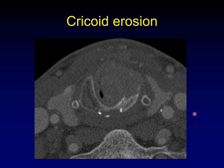Here's an example of cricoid cartilage erosion. You can see the circle of the cricoid cartilage interrupted by an erosive mass. Notice that there is sclerosis of the cartilage adjacent to the erosion — this is typical of laryngeal cartilages affected by tumor. There will first be a reactive sclerosis that may occur even in the absence of true erosion, followed by the more discrete erosion of the cartilage.